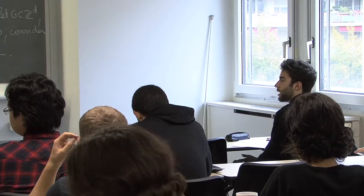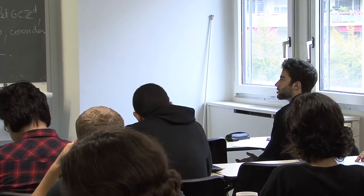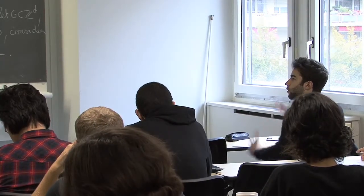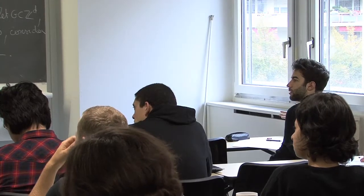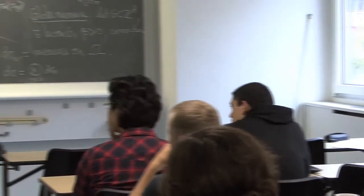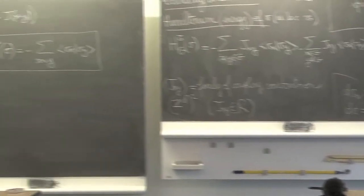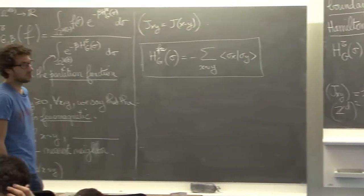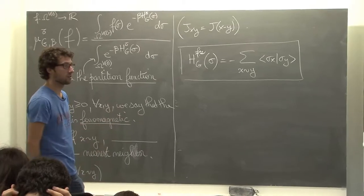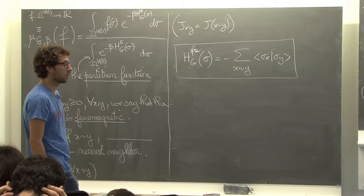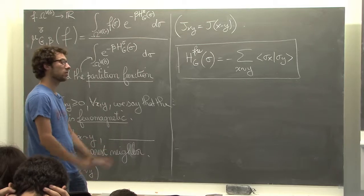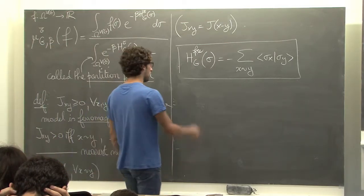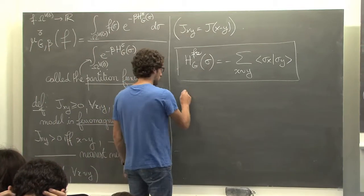A further question about coupling constants: you're right that there's a factor of 2 difference between pairs inside the graph and pairs crossing the boundary. It's not going to be relevant for what I'm presenting. When you speak about nearest neighbor, J_{xy} is strictly positive if and only if x and y are neighbors — so if not neighbors it's zero, if neighbors it's strictly positive.